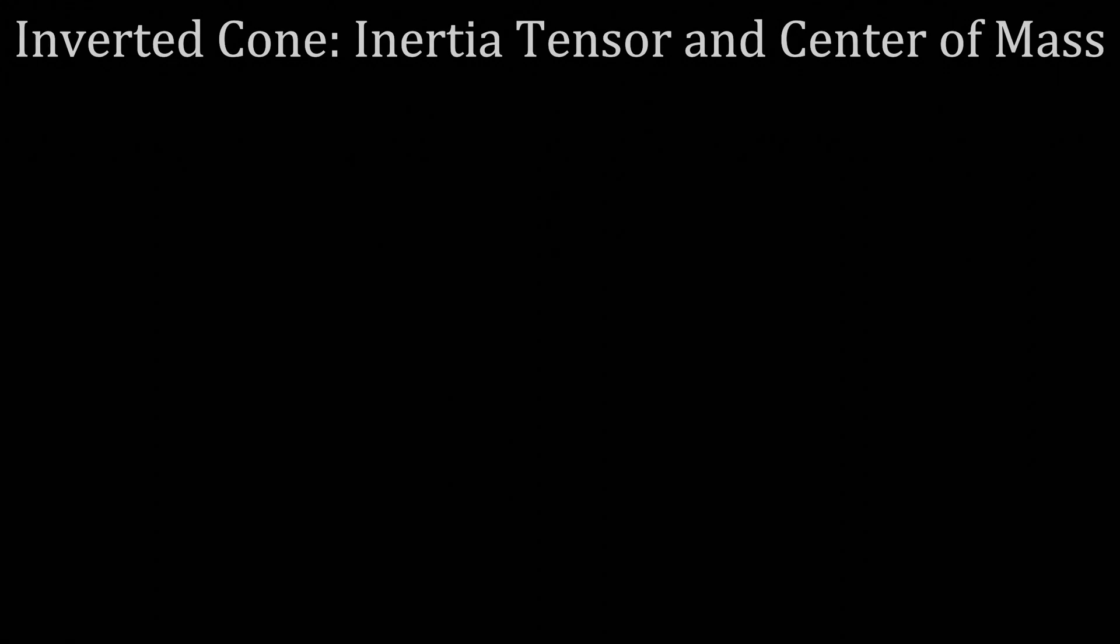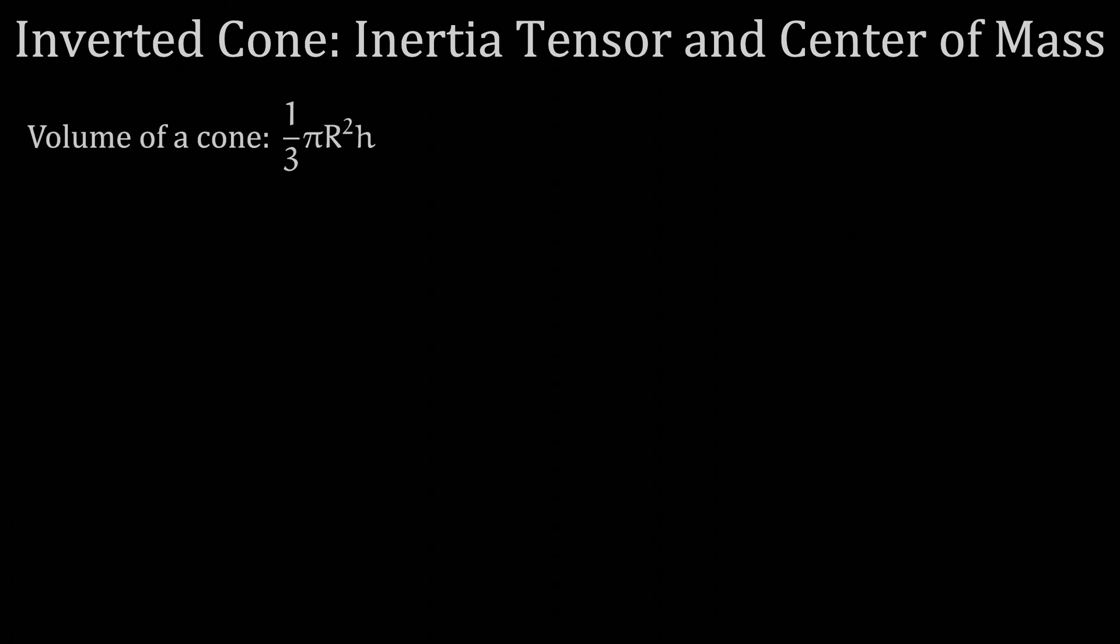First, we identify the volume of the cone, capital V. Then, with the definition of density as total mass, capital M, over volume, we get this for our cone density.